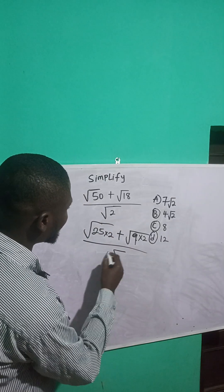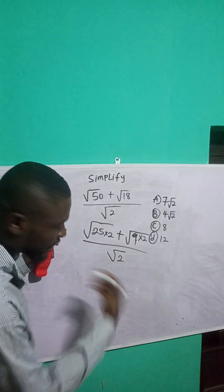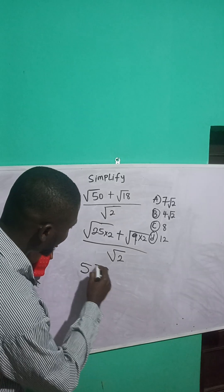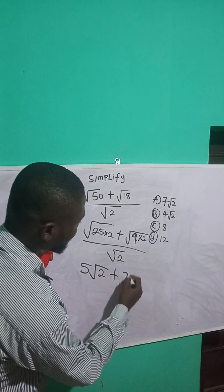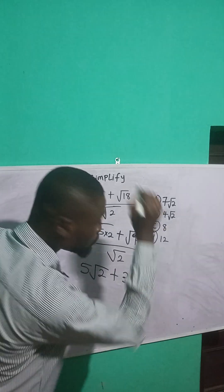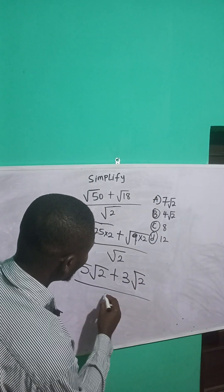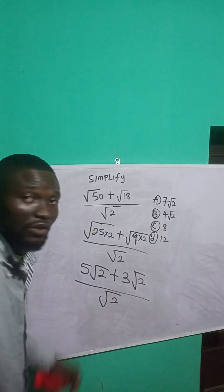Over √2. Now, square root of 25 is 5√2, I have √2 here, plus square root of 9 is 3√2 because I have √2 here, over √2.